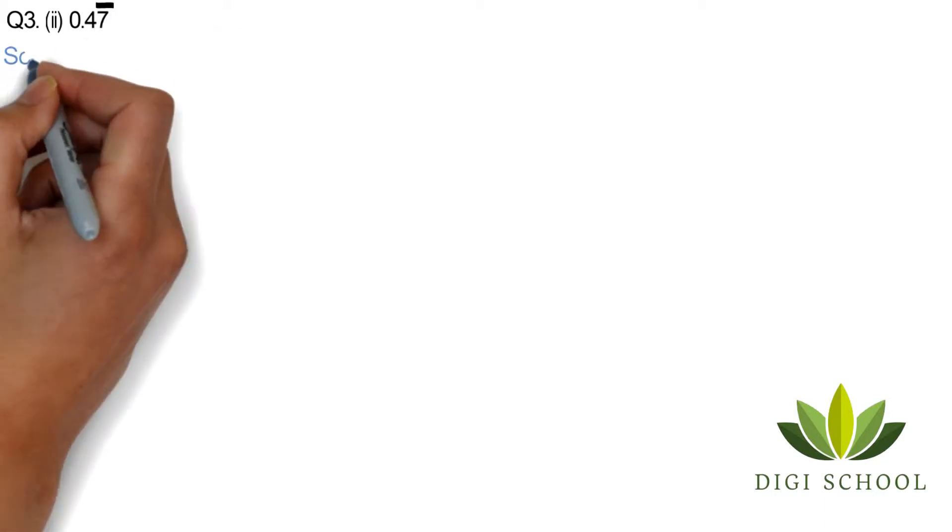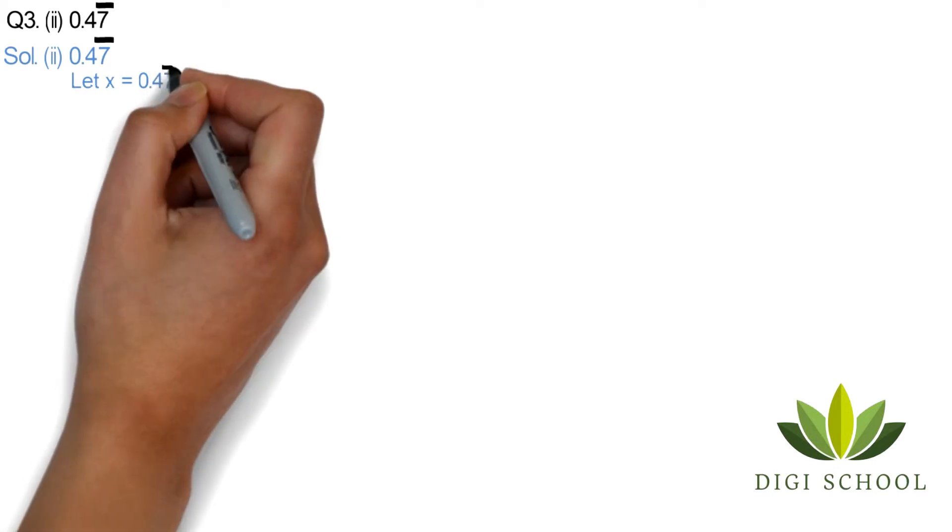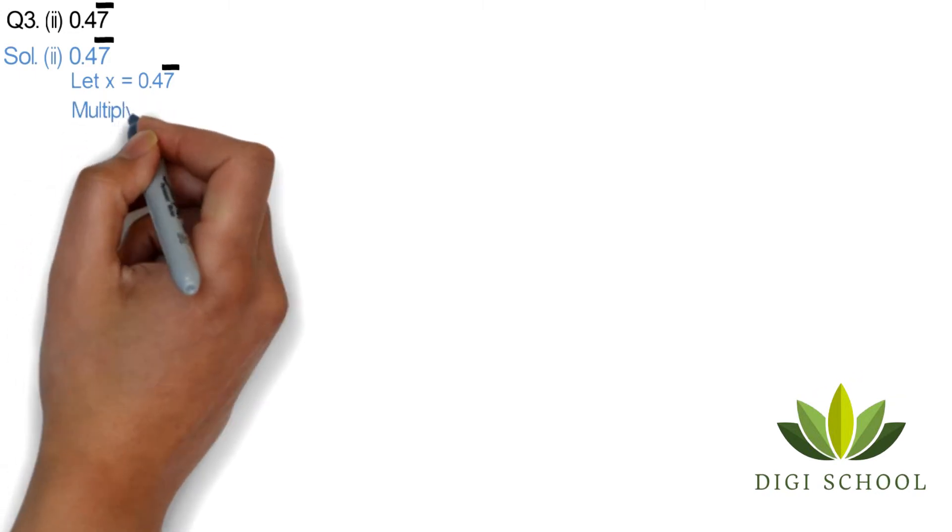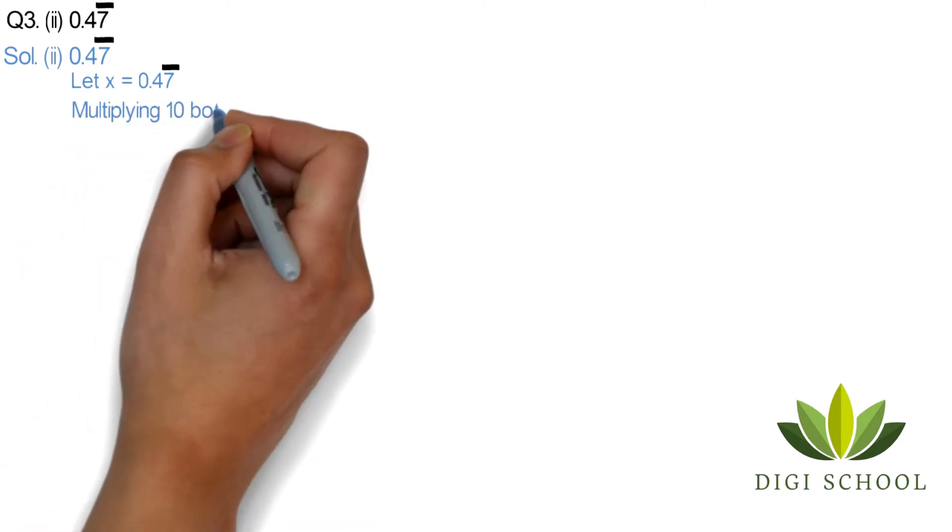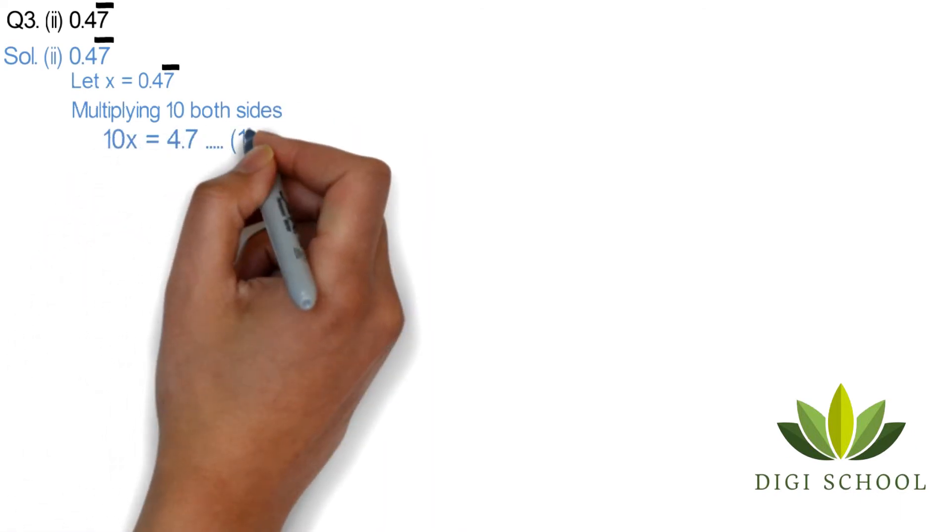Question 3, part 2: 0.47 bar. In this case, we will let x equal 0.47 bar. We will multiply by 10, so 10x would be equal to 4.7 bar.